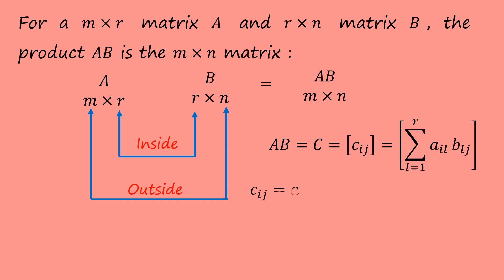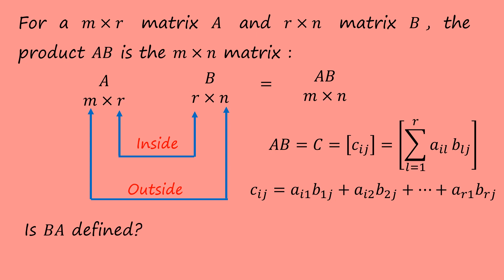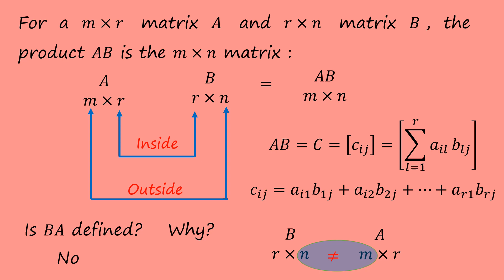If we multiply A and B in this form, what happens in the converse? Is BA defined? No. The reason is that the number of columns of B is not the same as the number of rows of A. Therefore, BA is not defined.